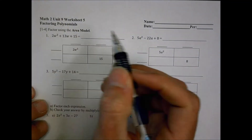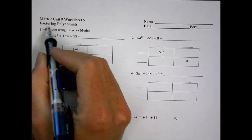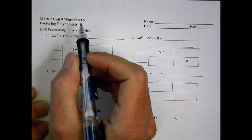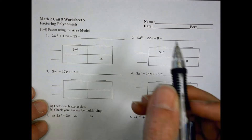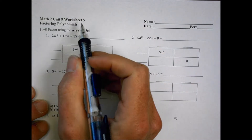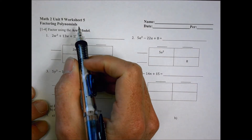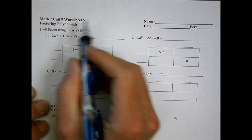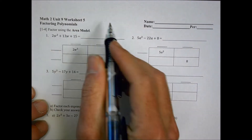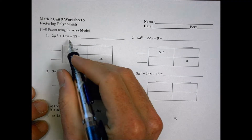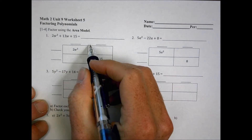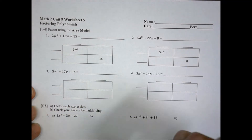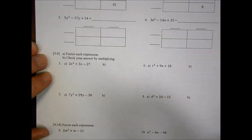Hey, this is Math 2, Unit 9, Worksheet No. 5, still talking about factoring polynomials. So today we're actually looking at some trinomials here, where we have three terms. We begin first of all with the area model, and then we're going to move from the area model down to just regular expressions without the area model.